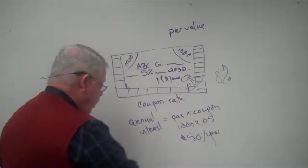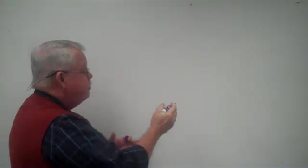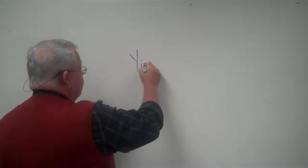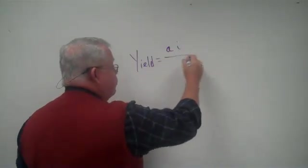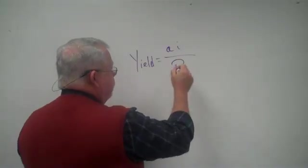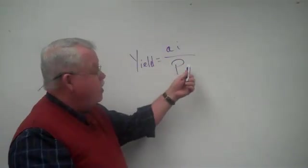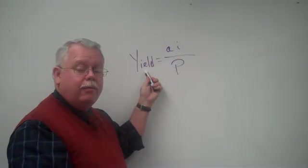Here's how we explain that. The return on your bond, your return on investment, or what we call the yield. The yield on the bond is going to be the annual interest you receive, that was $50, divided by the price you pay. So if you paid $1,000 and you got $50 every year, it has a yield of 5%.